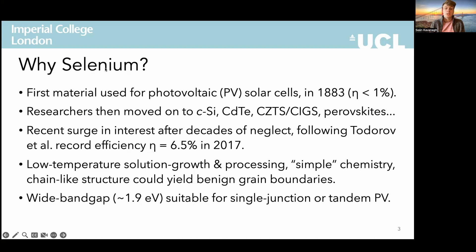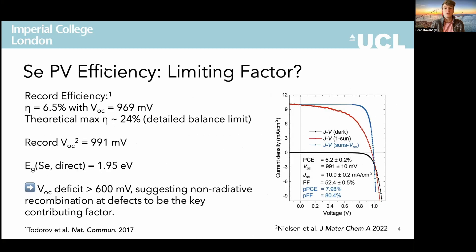There are quite a few major advantages to having efficient selenium solar cells given its low temperature solution growth and processing, which translates into much lower manufacturing and production costs, as well as a simple elemental chemistry which we would hope might make it easier to fully characterise and determine its defect chemistry and thus performance bottlenecks in solar applications. It also has a fairly wide bandgap and so it could potentially be used as an easily deposited top cell in tandem PV stacks. The current record efficiency is 6.5%, but selenium has a theoretical maximum efficiency of 24% in single junction solar cells based on its bandgap.